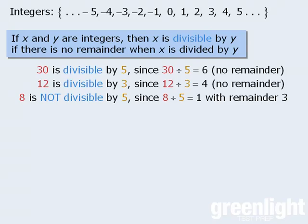Conversely, 8 is not divisible by 5 since 8 divided by 5 is equal to 1 with remainder 3.